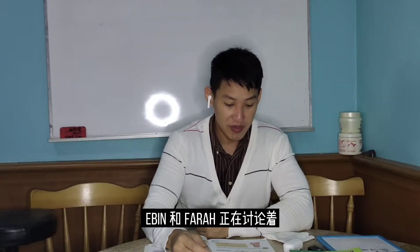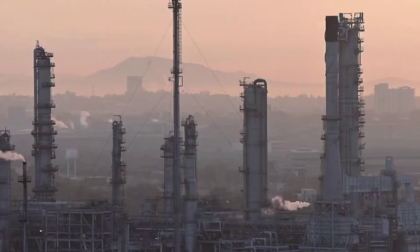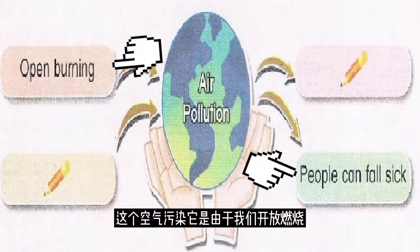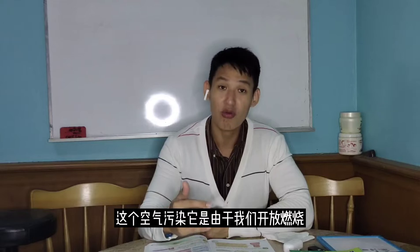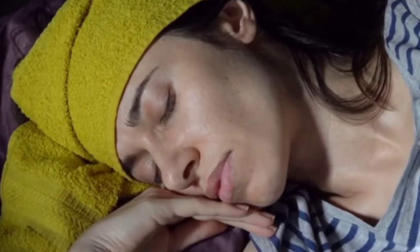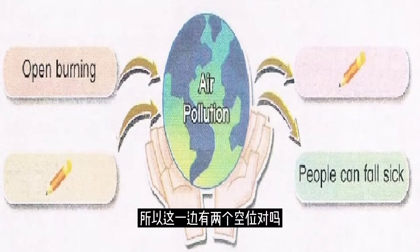So we can see that Ibn and Farah are talking about the causes and effects of air pollution. After reading the dialogue, you have to look at the chart given below. It has given you two examples, and you have to fill in two of these spaces with your own words.